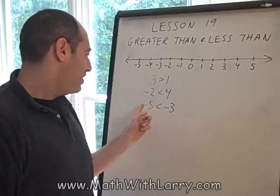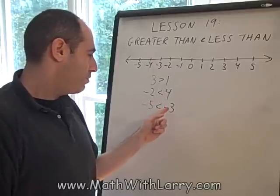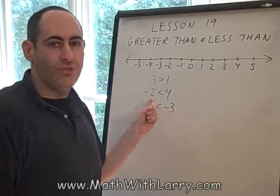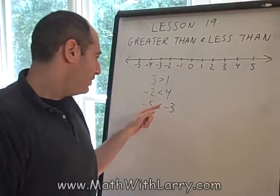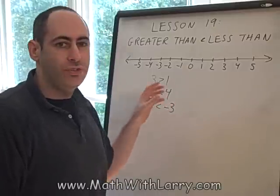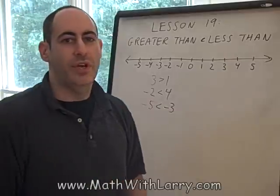The same thing here. Negative 5 is less than negative 3, or reading backwards, we could say negative 3 is greater than negative 5. But the whole point is the symbol always opens to the larger number. It's very helpful to just think of it like that.